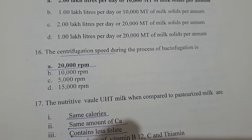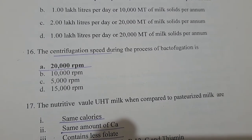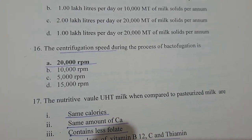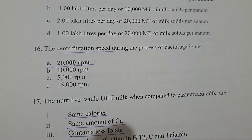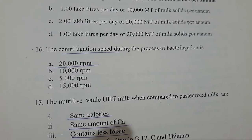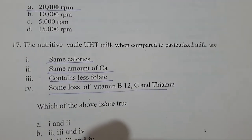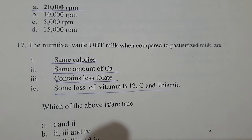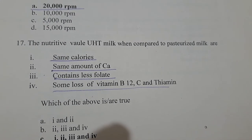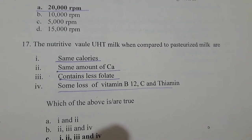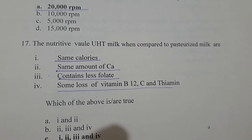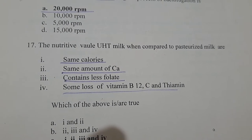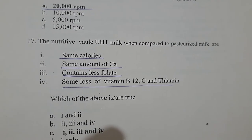Question 8: The centrifugation speed during the process of bactofugation is 20,000 RPM. Question 9: The nutritive value of UHT milk compared to pasteurized milk includes the same calories, same amount of calcium, less folate, and some loss of vitamin C.